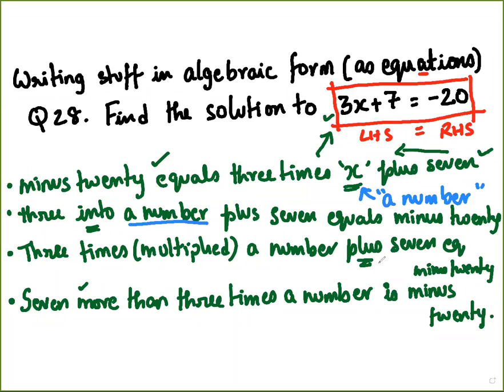This plus is talking about an operation: 3 times a number added to 7. So it's best, wherever it is possible, to use ordinary English words to express the same thing. So we decided to, instead of putting plus, we can write 'more than,' 'added to,' something like that. So the statement that we then finally came up with was: 7 more than 3 times a number is minus 20.